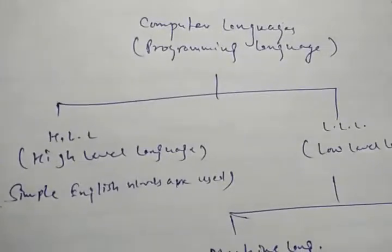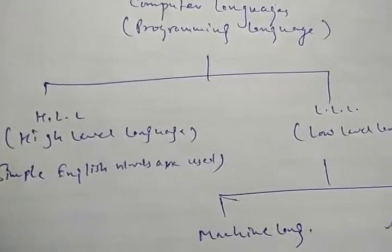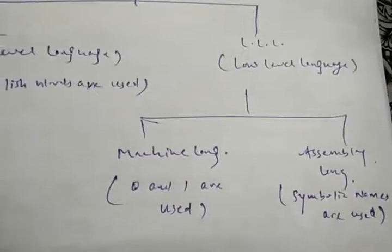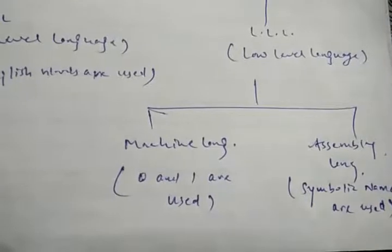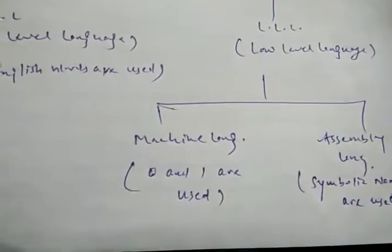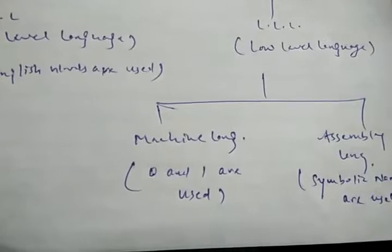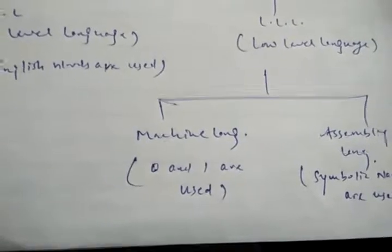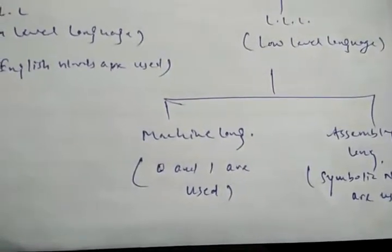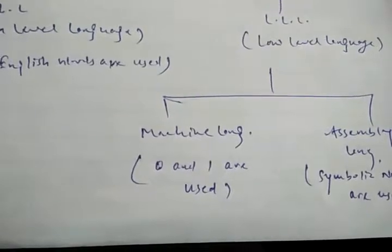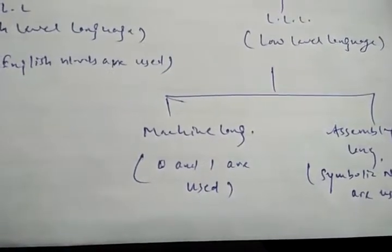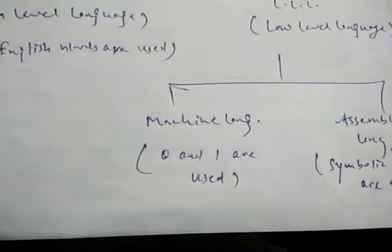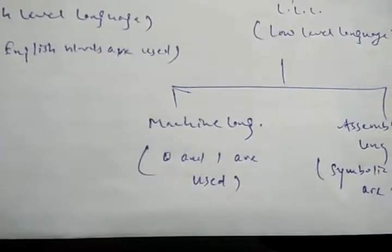Now, an important topic is computer language. Computer language is divided into two categories: high-level language and low-level language. Low-level language is again divided into two categories: machine language and assembly language. Machine language is in the form of 0s and 1s, called binary digits. This is directly understood by the computer, and the computer understands only machine-level language. So if we write any program in machine-level language, the program will execute very fast because no conversion from one language to another is required.